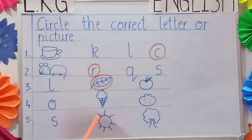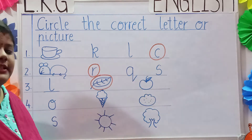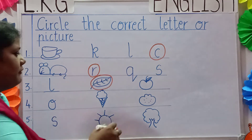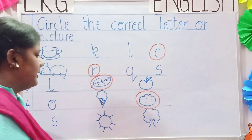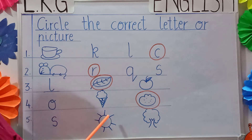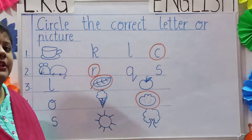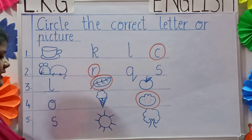Now over here children, O is given, and there is ice cream and orange. Which picture will we circle? We will circle the picture of an orange. Now see the last one, number 5. S is written here, and a picture of a sun and a tree are given. Which one will we circle? We will circle the sun.